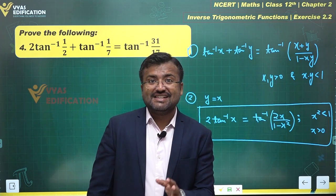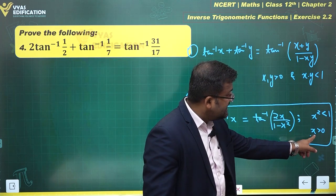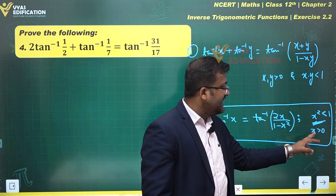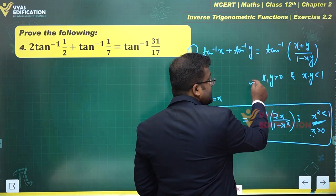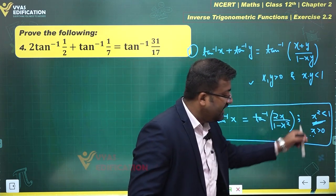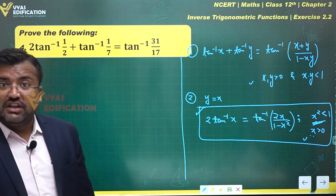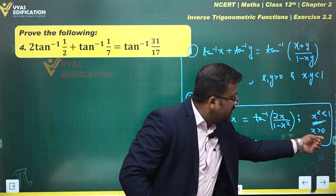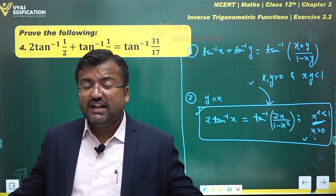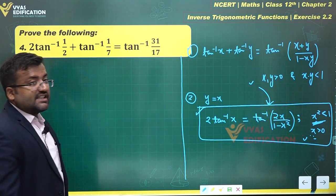So this result 2 tan inverse x = tan inverse(2x/(1-x²)) is also true for x less than 0, wherein x squared should still be less than 1. But since the minus signs cancel, x less than 0 doesn't make much of a difference in the final result. That's why NCERT only mentions x greater than 0, but x less than 0 works as well.